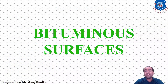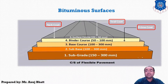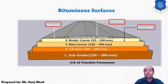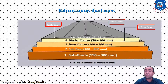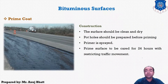Next we will discuss the bituminous surfaces to be provided on the base course. This is the layout of the pavement structure — we use layers on the base course: the prime coat, tack coat, and on the surface, the seal coat. Now let's talk about the prime coat.